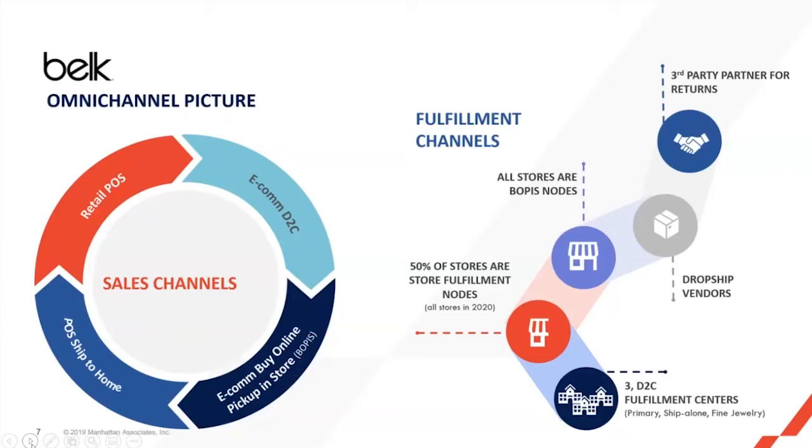And then when you're in the point of sale, we have Endless Isle - essentially, if we have the product anywhere in our network and you're in a store, you can place that order and we'll ship it to your home. On the fulfillment side, we deal with third-party vendor for returns. We have dropship vendors with significant growth in that area. Every one of our stores offers the BOPUS option. Right now, half of our stores will do store fulfillment, and shortly by the end of next year they will all be capable of doing it. And then we have three direct-to-consumer fulfillment centers that we use to ship to the customer.